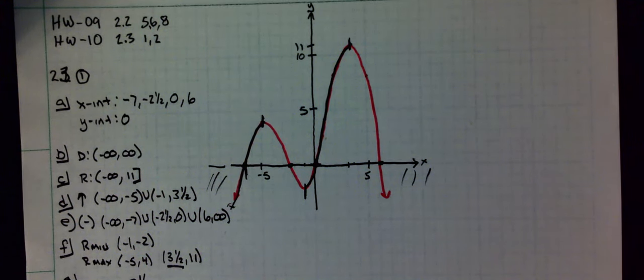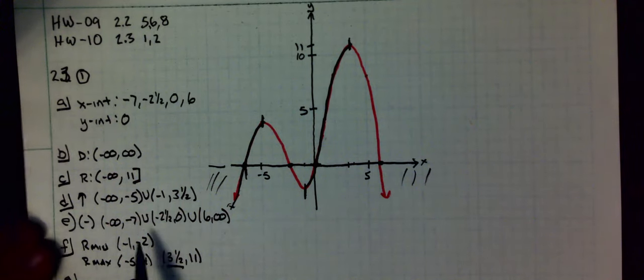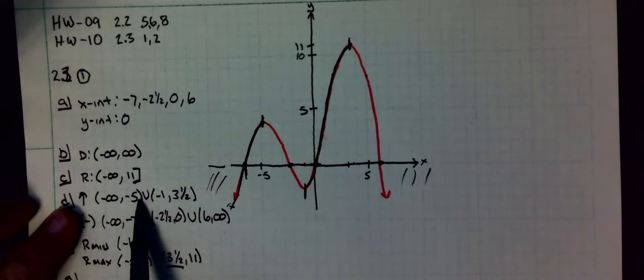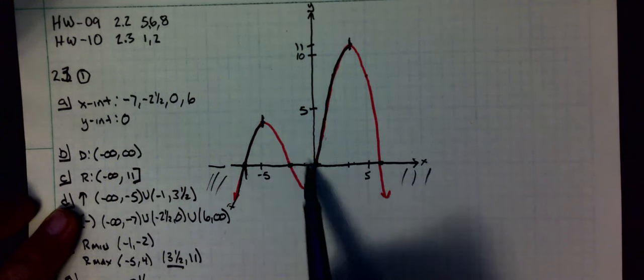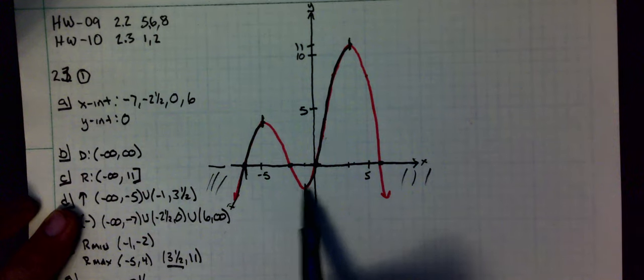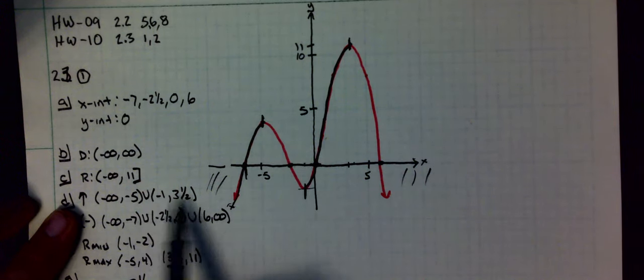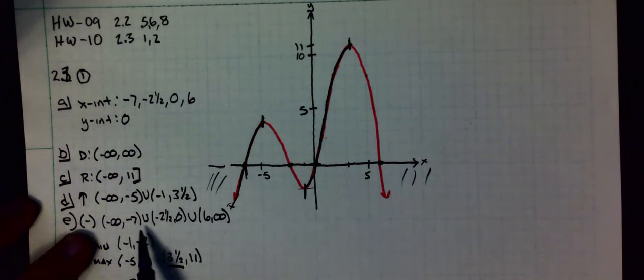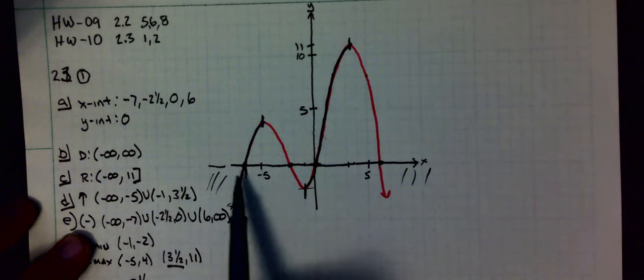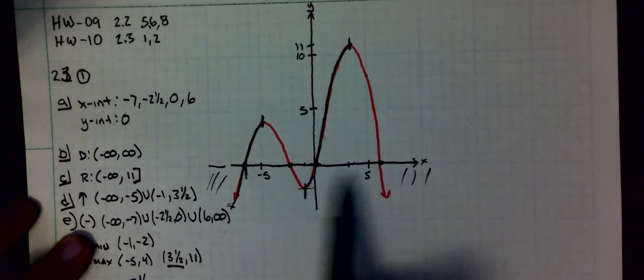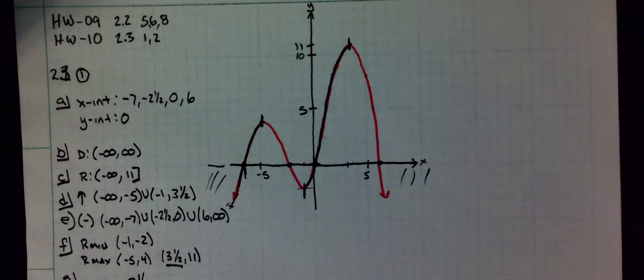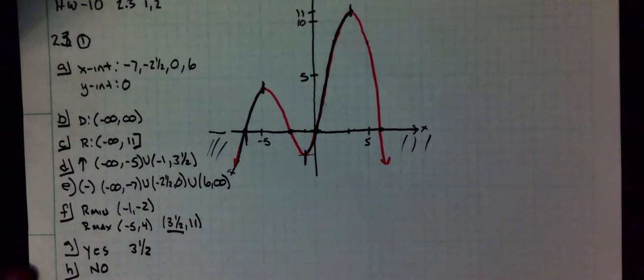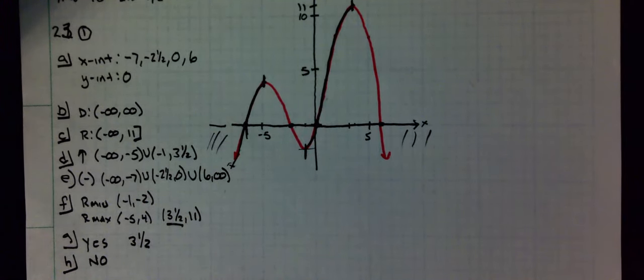So again, it's not very difficult. You just got to take your time and make sure you're precise with these round brackets. Again, when it's increasing or decreasing, when it hits the top or bottom, it's actually flat there. So we're never going to use square brackets there. Same thing with positive or negative: when is it positive or negative? At the intercepts it's 0, so round brackets because it's 0.